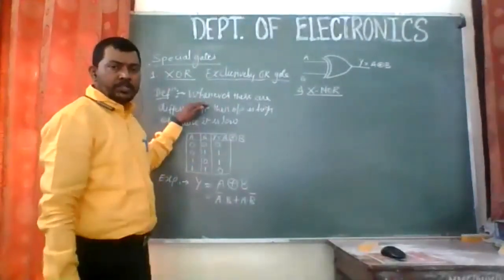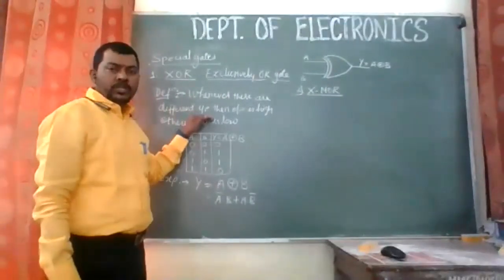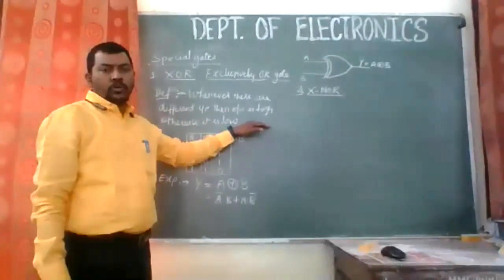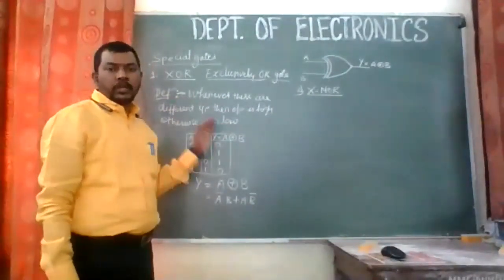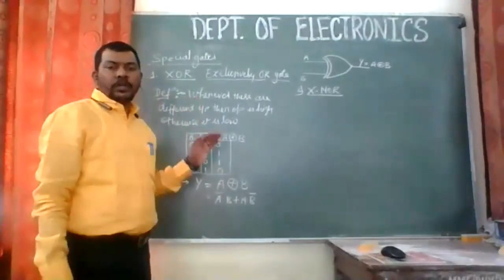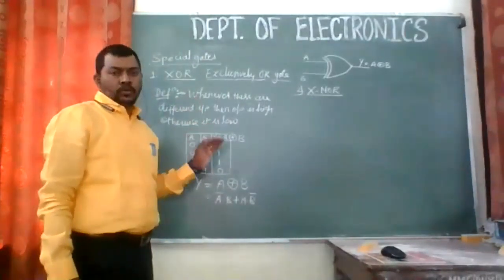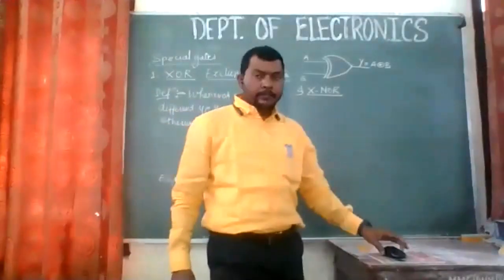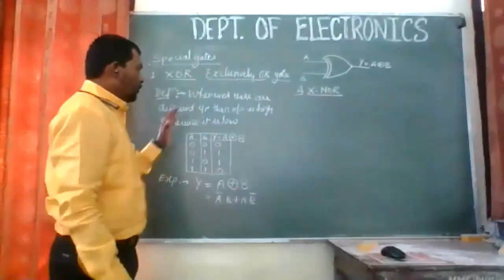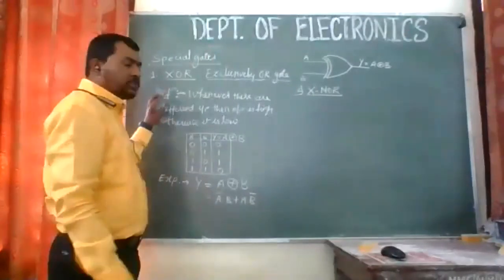The definition of XNOR will change like this: whenever there are different inputs, then the output is low; otherwise it is high. For the same input, the output is high; for different inputs, the output is low. That is the definition of XNOR gate.